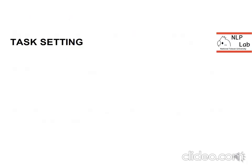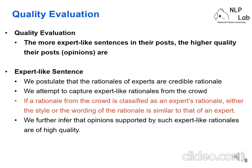Let's see the task setting in this paper. The goal is to evaluate the quality of opinions from the crowd. The first assumption is that the more expert-like sentences in a post, the higher quality the post is. An expert-like sentence is one that is predicted as expert rationale by our model — not written by an expert, but considered as such by the model, because either its style or wording is similar to an expert. Based on this notion, we sort out posts containing many expert-like sentences and call these high-quality posts.